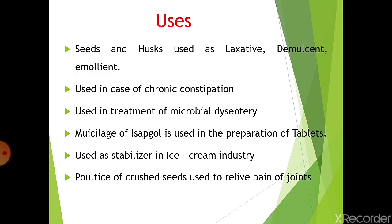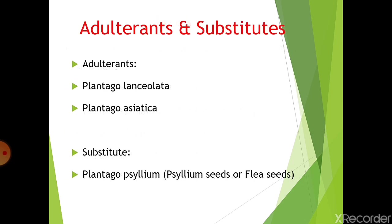Uses of the drug: seeds and husks are used as laxative, demulcent, and emollient. It is used in cases of chronic constipation and in the treatment of amoebic dysentery. The mucilage of isapgol is used in preparation of tablets and as a stabilizer in ice cream industries. A poultice of crushed seeds is used to relieve joint pains. Adulterants include Plantago lanceolata and Plantago asiatica, and the substitute is Plantago psyllium, also called psyllium seeds or flea seeds.